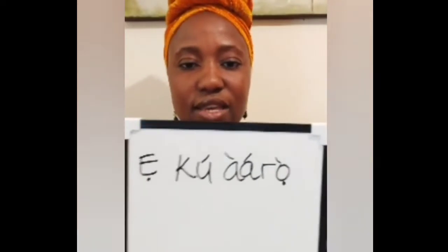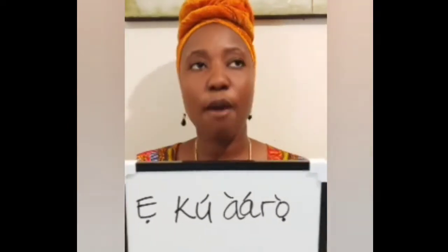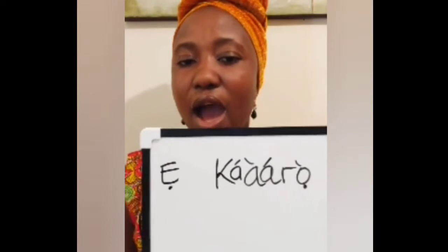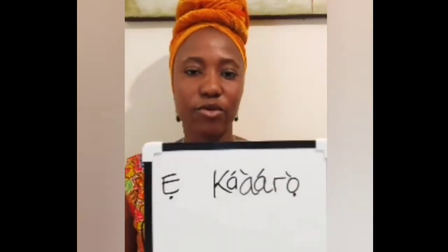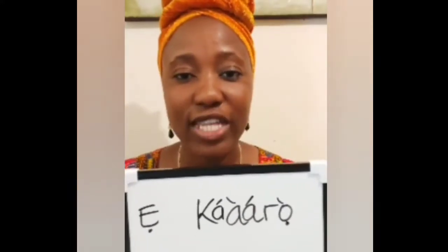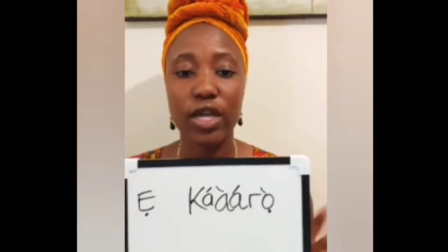When you see a Yoruba person for the first time, or if you are in a formal setting like talking to your boss, you need to use the word E — it doesn't matter if your boss is older or younger than you. So E goes together with KUU and every other form of greeting. How would we say good morning? Remember ARO — E + KUU + ARO gives us EKUARO, which is good morning.